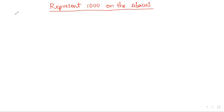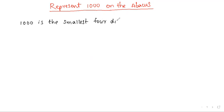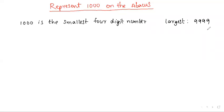What about 1000? 1000 is the smallest four-digit number. The largest four-digit number means four nines. The largest five-digit number means five nines, the largest six-digit number is six nines, and so on.